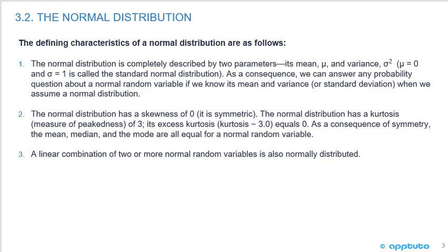Two, the normal distribution has a skewness of zero. It's symmetric. The normal distribution has a kurtosis, which is a measure of peakedness, of three. Its excess kurtosis, kurtosis minus three, equals zero. As a consequence of symmetry, the mean, median, and mode are all equal for a normal random variable.